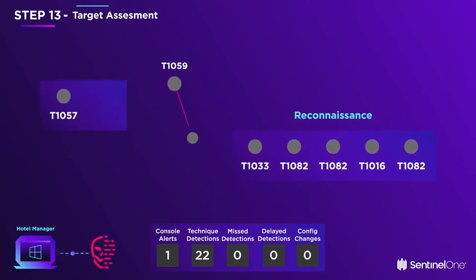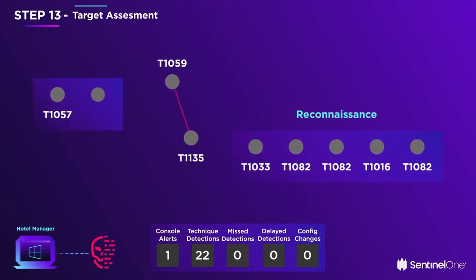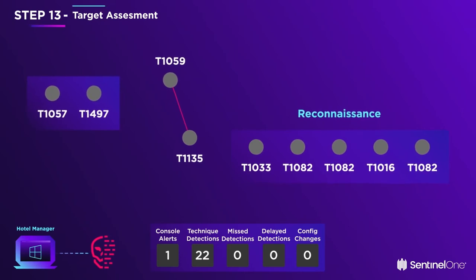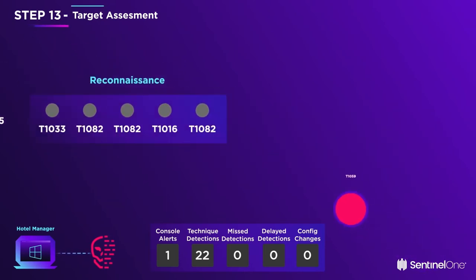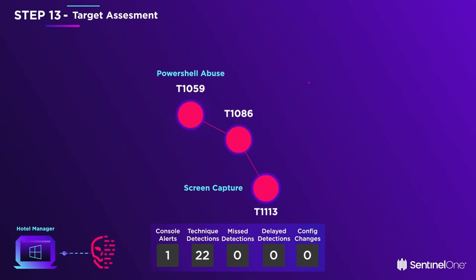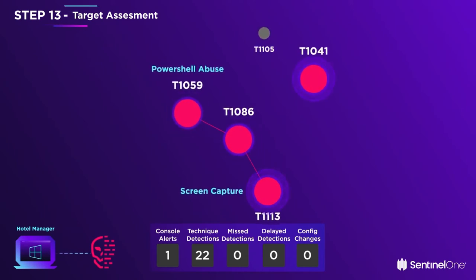The script even tries to figure out if it is running in a sandbox in order to evade analysis. The adversary then takes a screenshot and uploads it to his command and control, or C2 server.